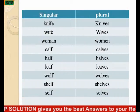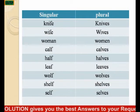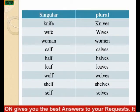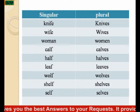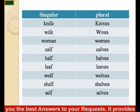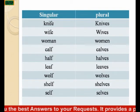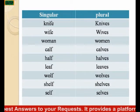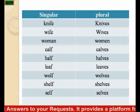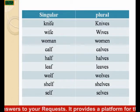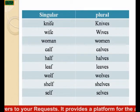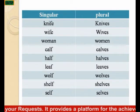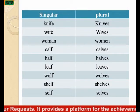Some nouns form their plurals by changing internal vowel or consonant sounds. Examples: knife becomes knives, wife becomes wives, woman becomes women, leaf becomes leaves, wolf becomes wolves, shelf becomes shelves.